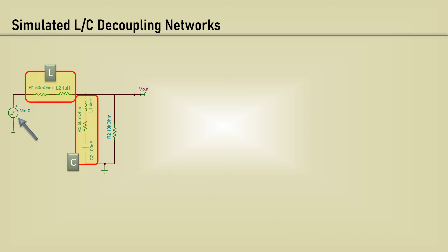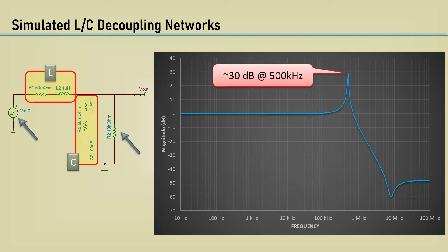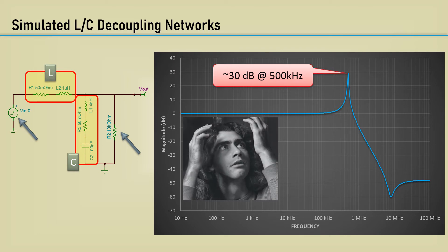The source and the load may have some additional parasitics as well, but for demonstration purposes, an ideal source and load will suffice. The 10k resistor just represents the DC load of the op-amp. Here's the AC response. At resonance between the L and C, we get a massive 30 dB increase at 500 kHz. This is because the Q of the inductor and capacitor is very high.